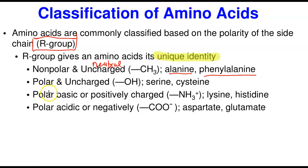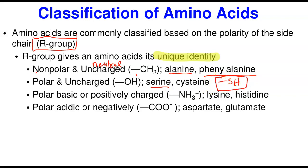Next we have the polar and uncharged. These are not ionized at any pH, meaning they carry no charge. A good example is one that ends with an OH group — the OH group is not charged but it is a polar bond. Examples include serine and cysteine; cysteine ends with a sulfhydryl group (SH), which is slightly polar but not charged.